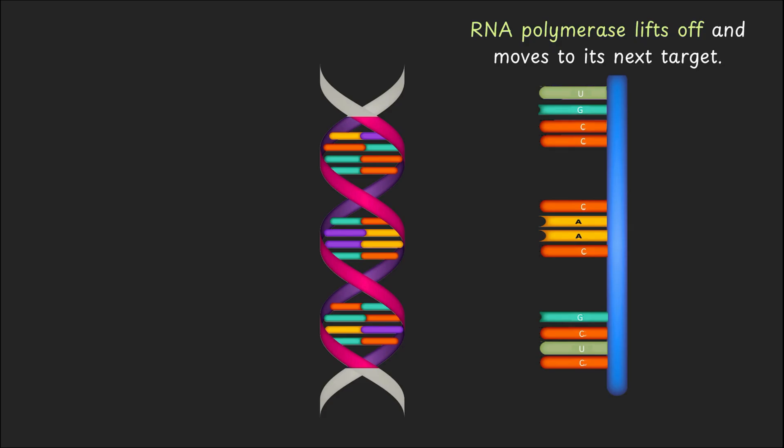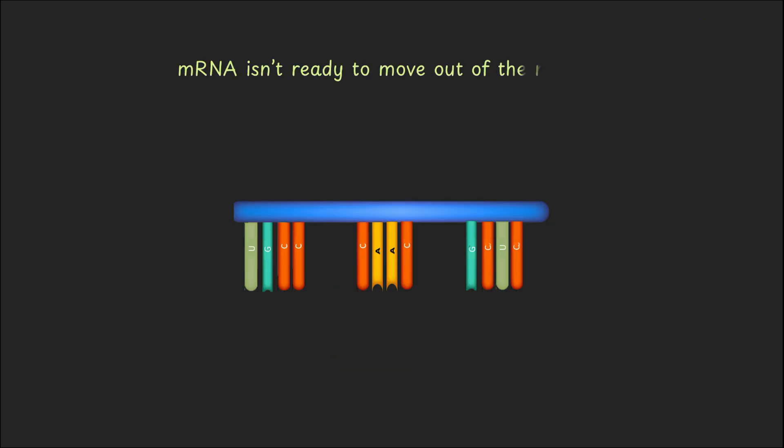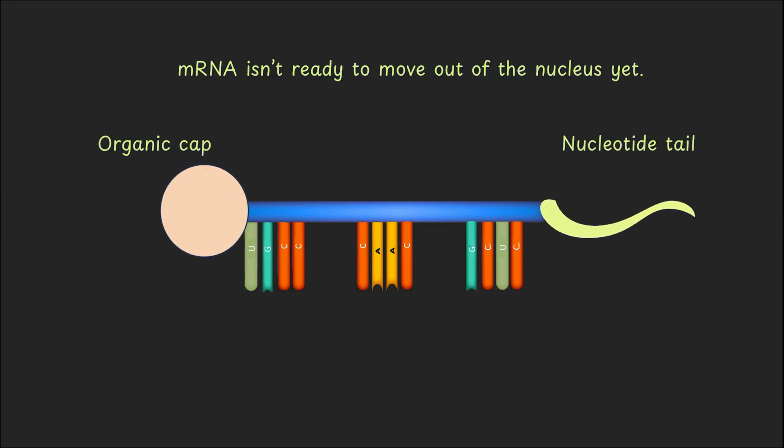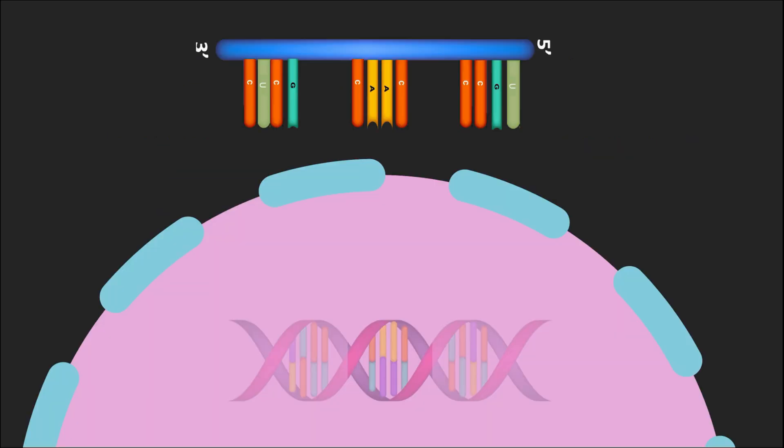But wait, the mRNA formed is still not ready to leave the nucleus. It needs some protective gears like a cap and a tail, which are also made up of nucleotides. Think of this process as packing glassware with bubble wrap to keep them safe as the mRNA heads out of the nucleus into the cytoplasm.